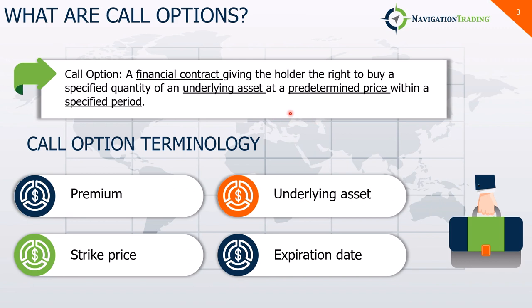The strike price — that predetermined price — is the price at which the holder of an option can buy, for a call option, or sell, for a put option, that underlying asset. The expiration date — that specified period — is the date at which the option contract becomes invalid, after which the option holder no longer holds the right to buy or sell that underlying asset.